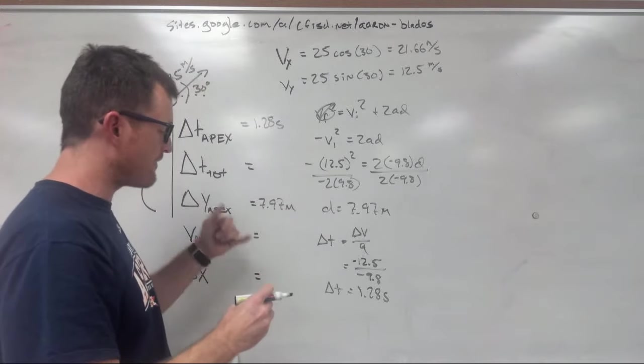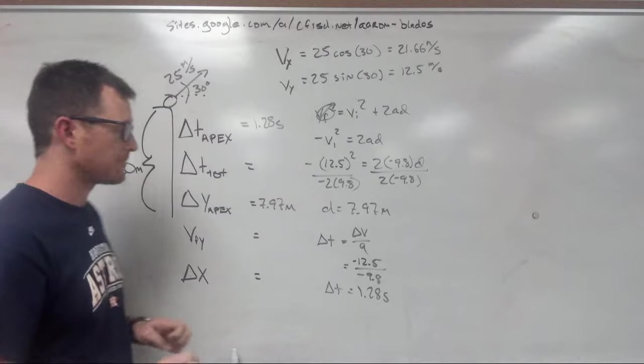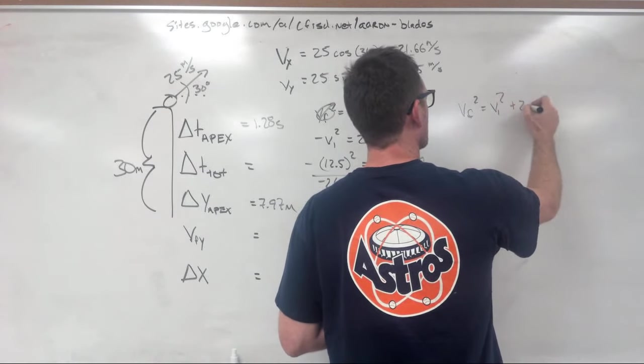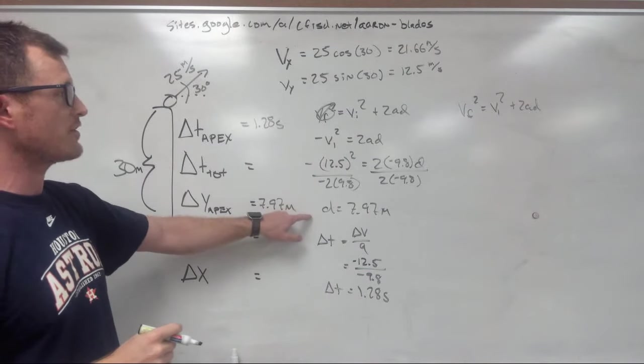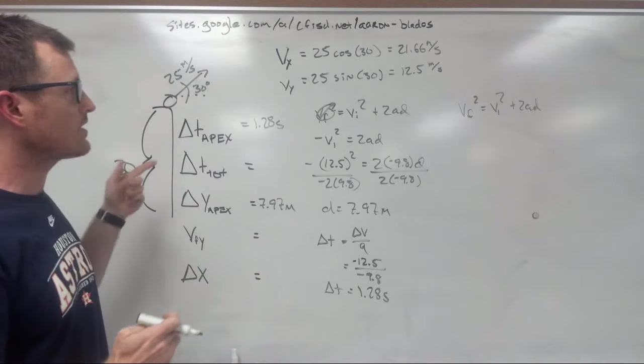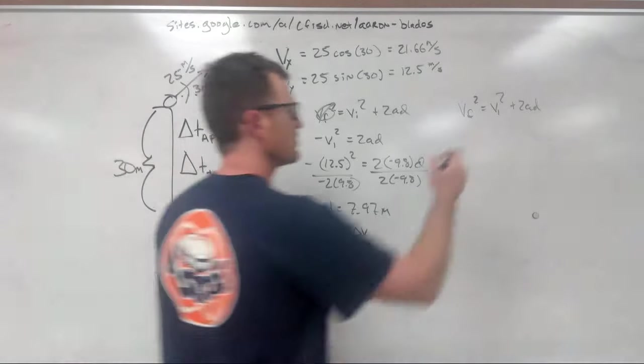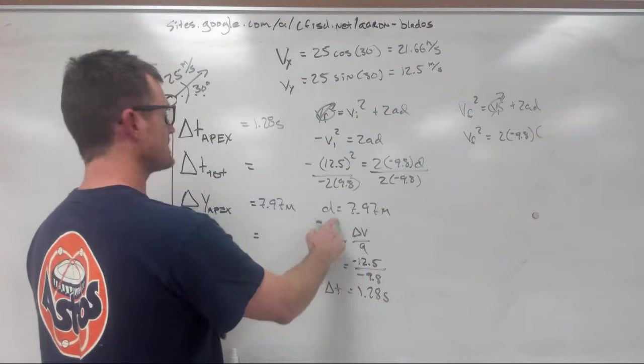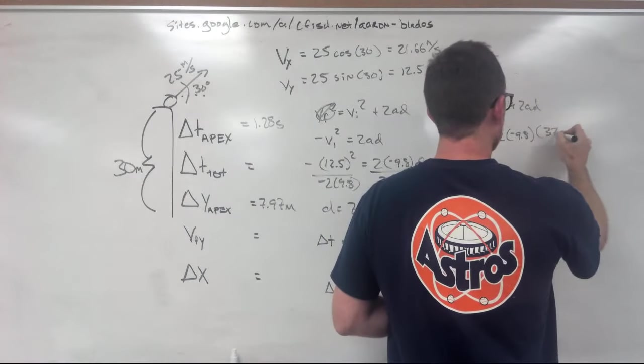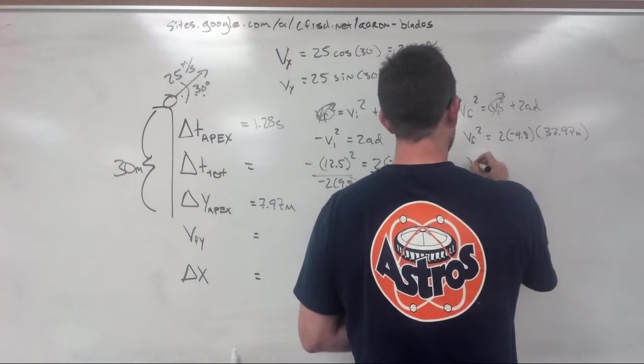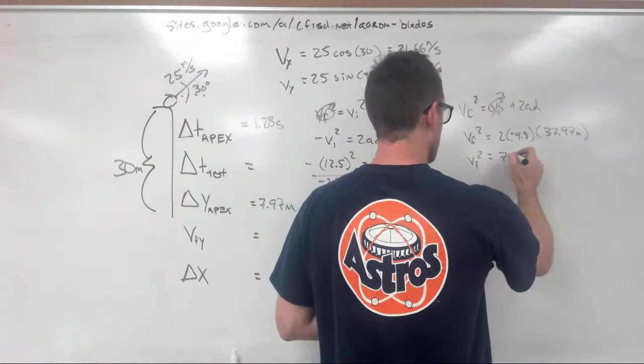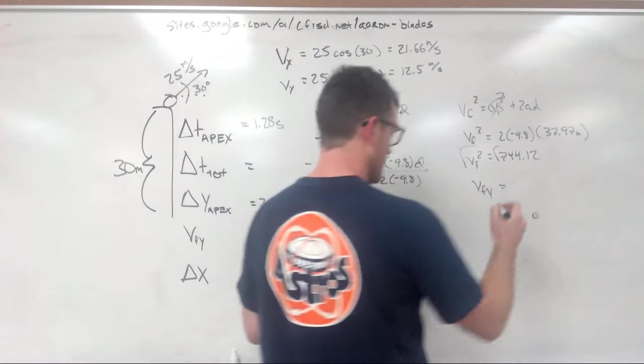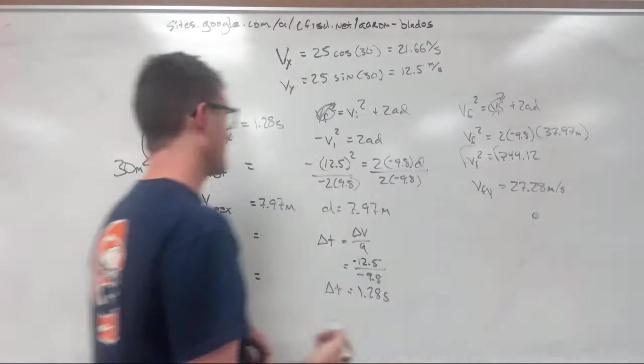Now we're going to try to figure out how fast the object is moving when it hits the bottom, this VFY. We're going to reuse our favorite equation, this guy right here, VF squared equals VI squared plus 2AD. In this case, we know how far the object is falling from the apex all the way to the bottom, and we know that the initial velocity when it begins its fall will be zero. So we're just solving for this VF squared equals 2 times negative 9.8 times 7.97 plus our original 30, or 37.97 meters. That gives us a VF squared of 744.12, and if we square root both sides, we end up with a V final in the Y direction of 27.28 meters per second.